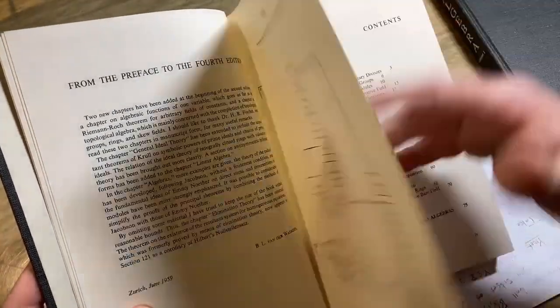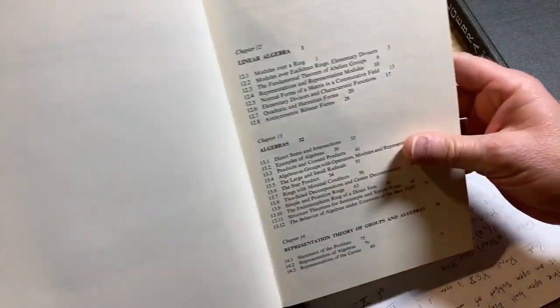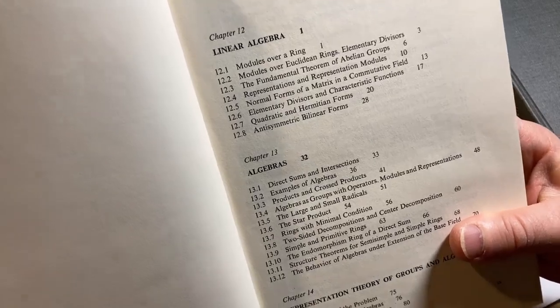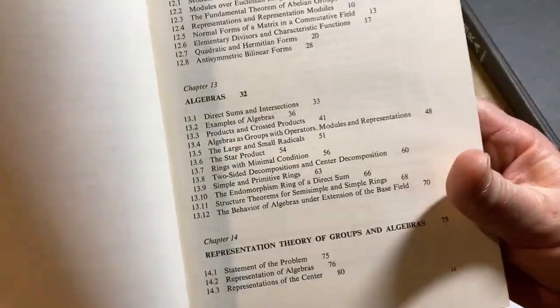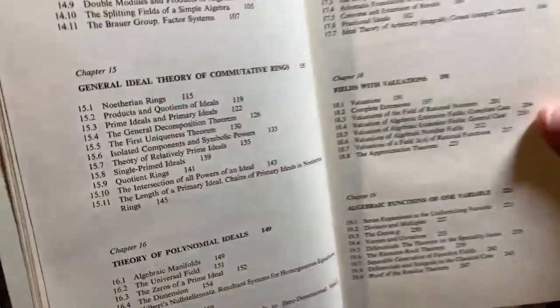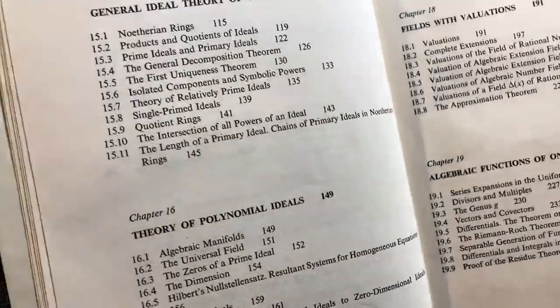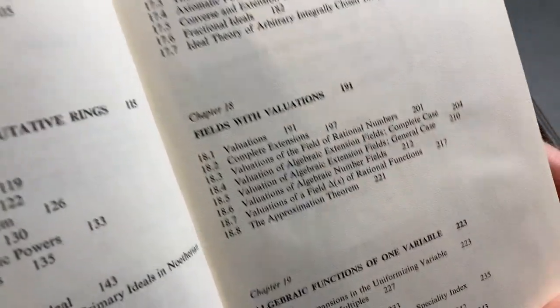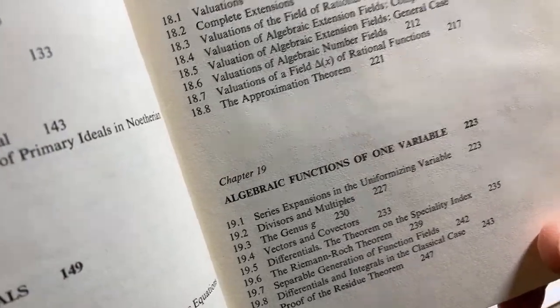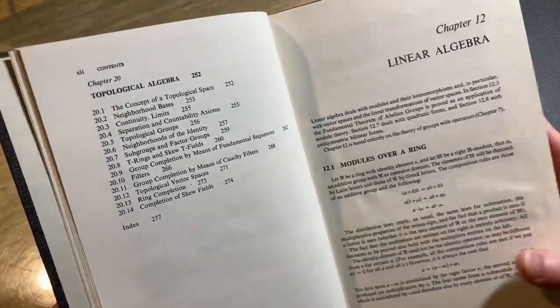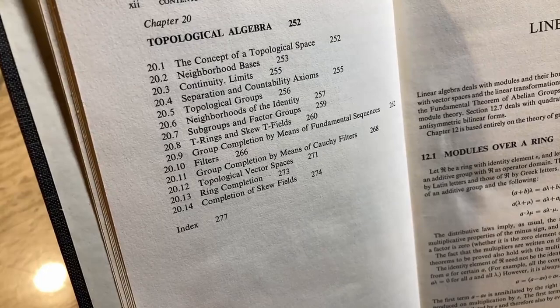Volume 2. And then here it gives you a guide for volume 1. Here's the contents: linear algebra, algebras, representation theory of groups and algebras, and then we have general ideal theory of commutative rings, theory of polynomial ideals, integral algebraic elements, fields with valuations. Oh, I remember reading about that. It's been a while since I've seen that topic. Algebraic functions of one variable. Some topics that you don't always see in books here. You know, it's a little more advanced. Topological algebra. That's not something maybe that you've ever heard of. So it starts with modules over a ring. Cool.